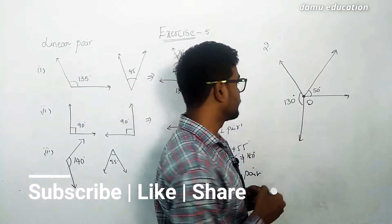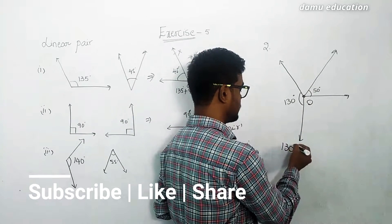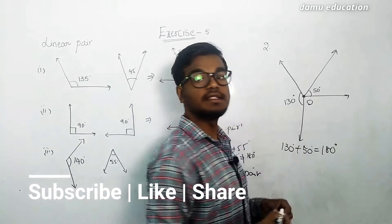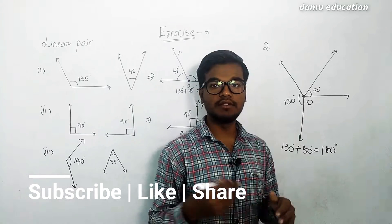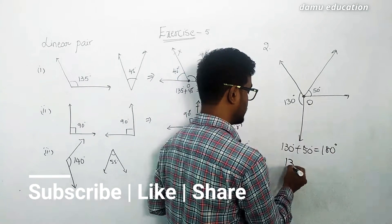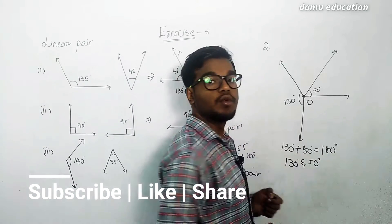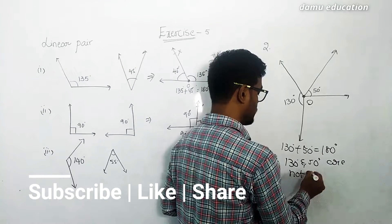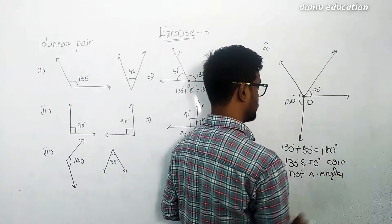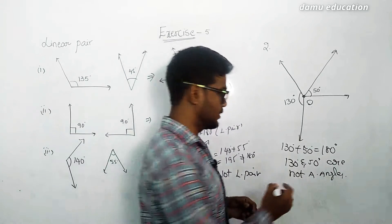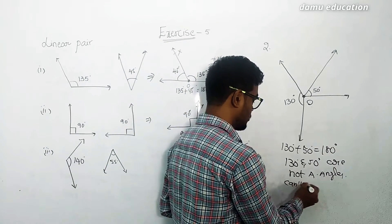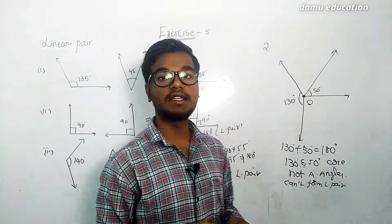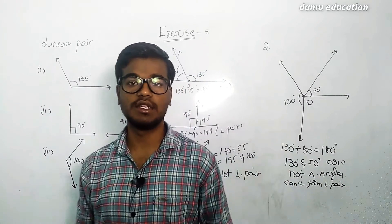If you add 130 and 50 you get 180 degrees, so the sum equals 180 degrees. But even though the sum is 180 degrees, the angles 130 degrees and 50 degrees are not adjacent angles, so they cannot form a linear pair. This was Niharika's mistake.